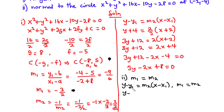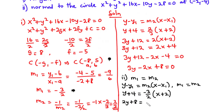So: y − y1 = M2(x − x1), giving y + 4 = (−3/2)(x + 2). Multiplying each term by 2: 2y + 8 = −3(x + 2) = −3x − 6. Transposing to the left-hand side: 2y + 3x + 8 + 6 = 0, so 2y + 3x + 14 = 0. This is the equation of the normal to the circle.